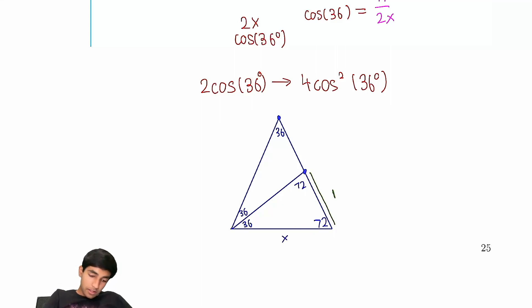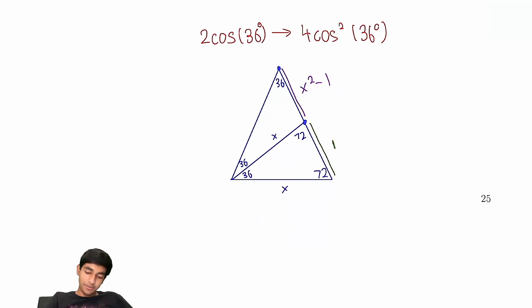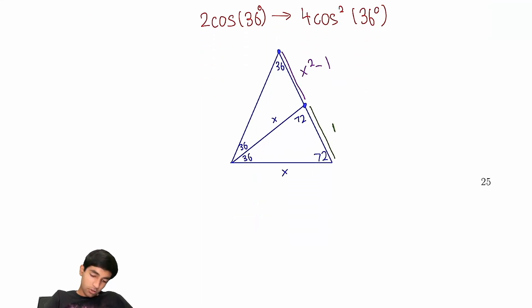And then, similarly, we would also have this is x. And then the key thing is the ratio of this to the big side is also going to be x. So this whole thing is going to be x squared. So this thing is going to be x squared minus 1. And, of course, this is also going to be x squared over here. Now take a look.